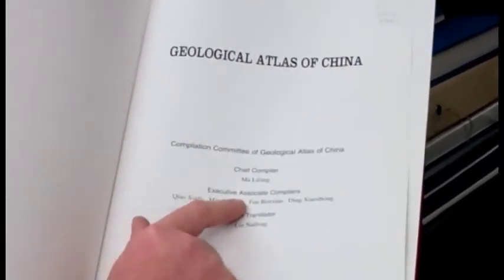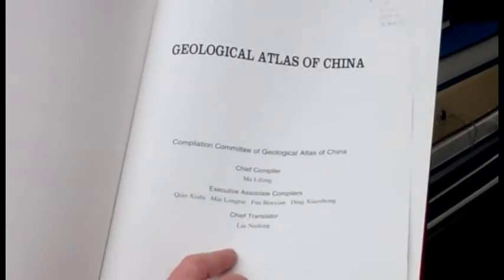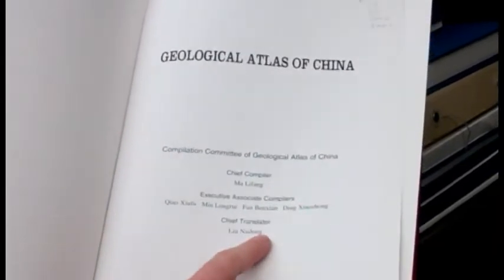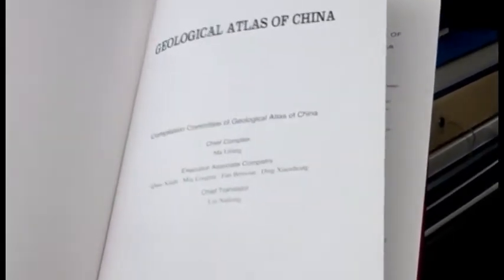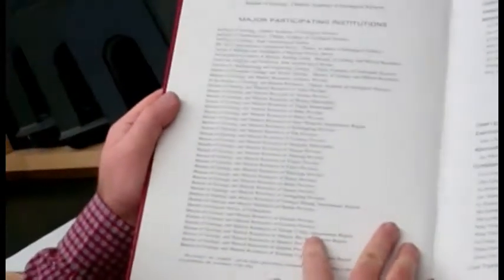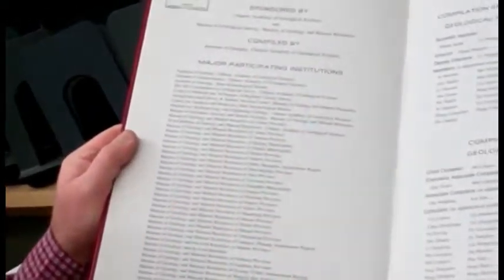And then I would have additional authors, compiler, executive associate compilers. And I would add the translator in a different field. Geological publishing house is the publisher. Beijing is the location. And then this is probably a little too far afield to be mentioned in the record. But I would still need to find a date somewhere.